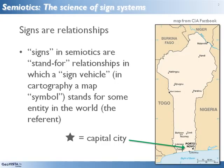In cartography, it's common to use the term symbol to refer to what semioticians mean by sign vehicle. For example, we say that a star is often used as a symbol to represent a capital city on a map. In semiotics, symbol is a special kind of sign vehicle, but we'll leave that complication for another day.